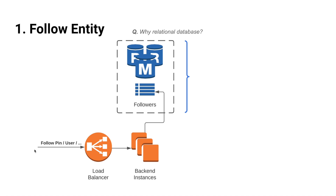Here we're using a relational database to store the follower relationship. The interviewer will definitely ask you why not use other types of databases, for example graph or document-based. You should be able to explain yourself for choosing one over the other. I would say something like: non-relational databases like MongoDB are not great for storing relationships between objects — they're good for one-to-one mapping data that doesn't change often. Graph databases like Neo4j are great when we need high depth of relationships between entities, like in Facebook's social network. However, in our case we simply have a one-to-many mapping between a user and an entity, so a relational database makes sense. Also, Pinterest uses a relational database to store pins, so it wouldn't make sense to introduce another type just for follower relationships.